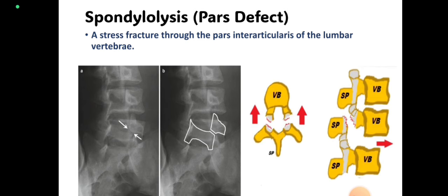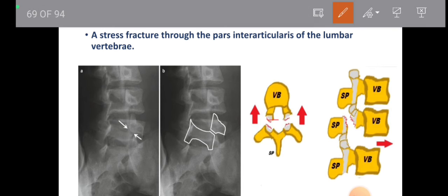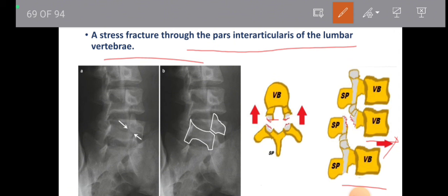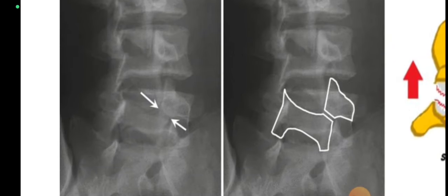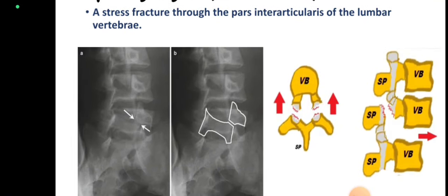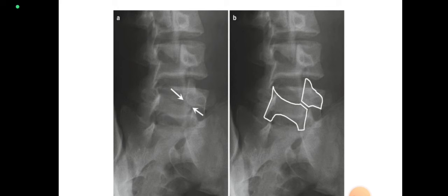Spondylolysis is a pars defect — breakage of the pars interarticularis. You can see the breakage of the pars interarticularis easily in a superior view, and in the lateral view the vertebra may shift anteriorly or posteriorly. It is a stress fracture through the pars interarticularis of the lumbar vertebra, easily observable in the oblique view. Here you can see the scotty dog — everything is in alignment, so it is a scotty dog with collar, showing a stress fracture at the neck of the scotty dog.